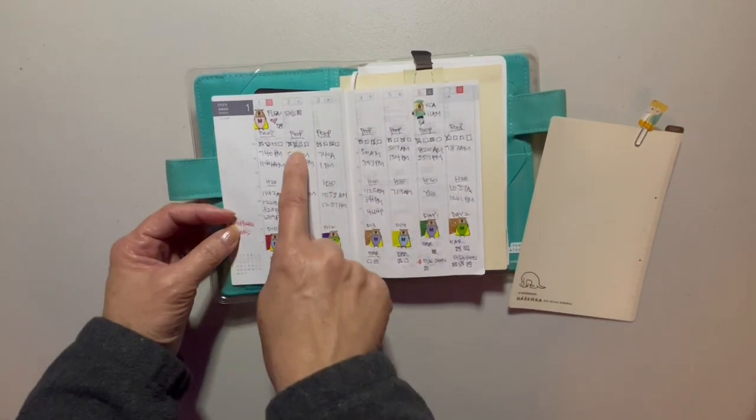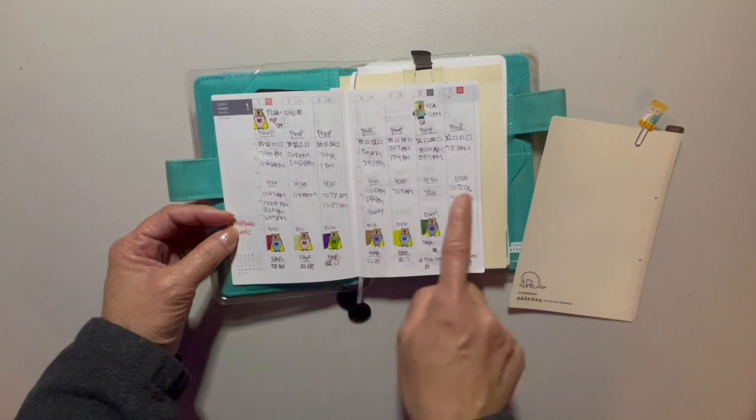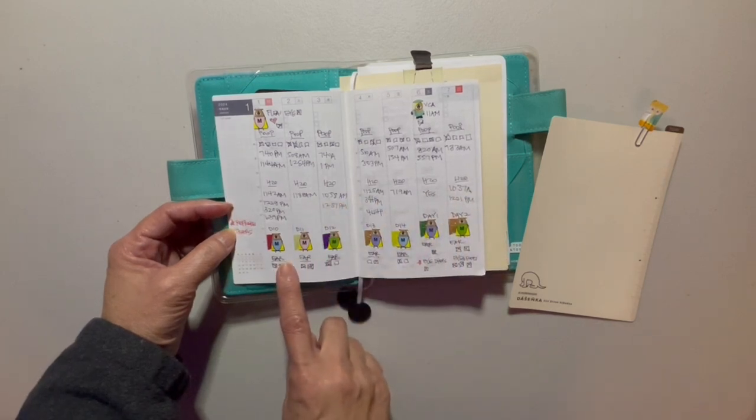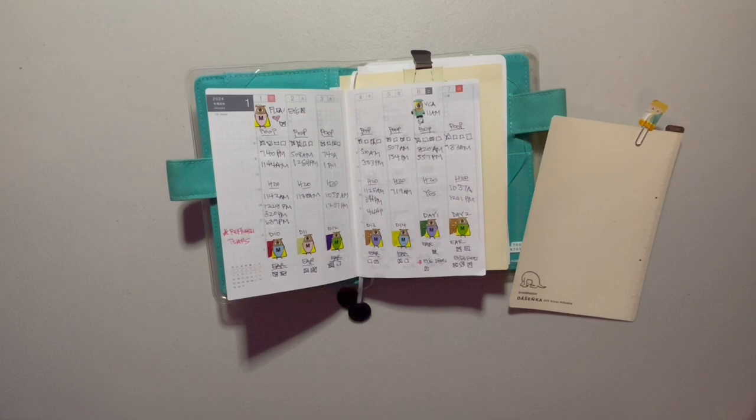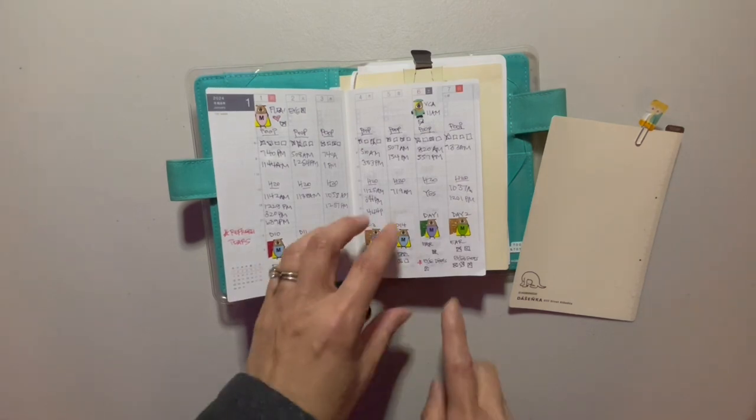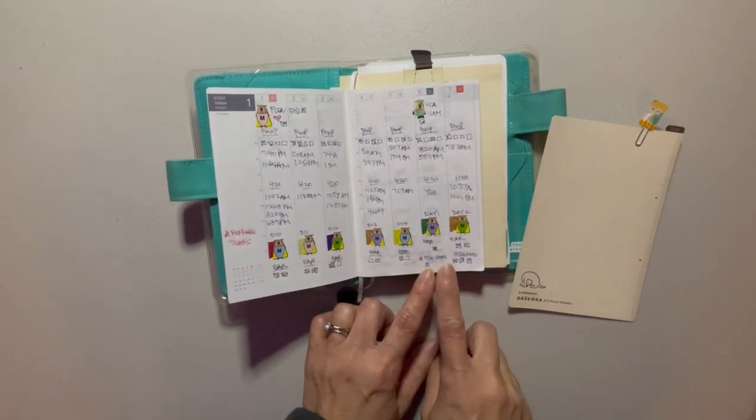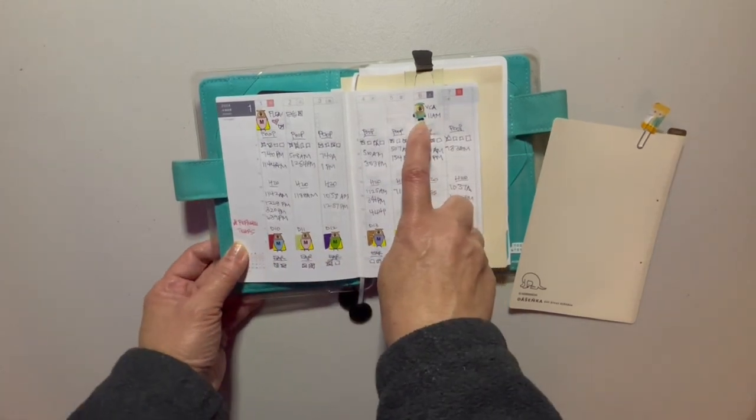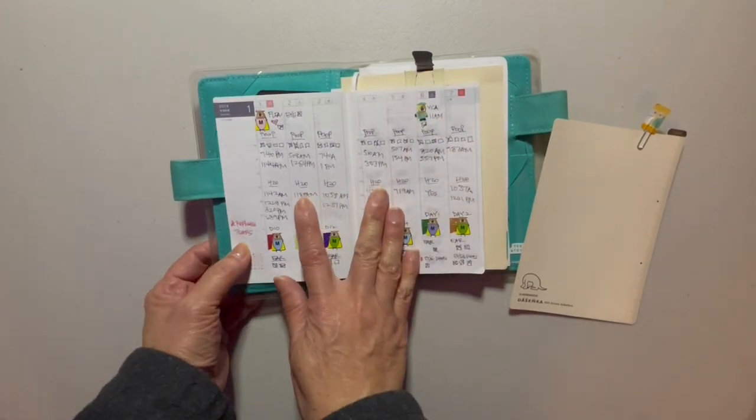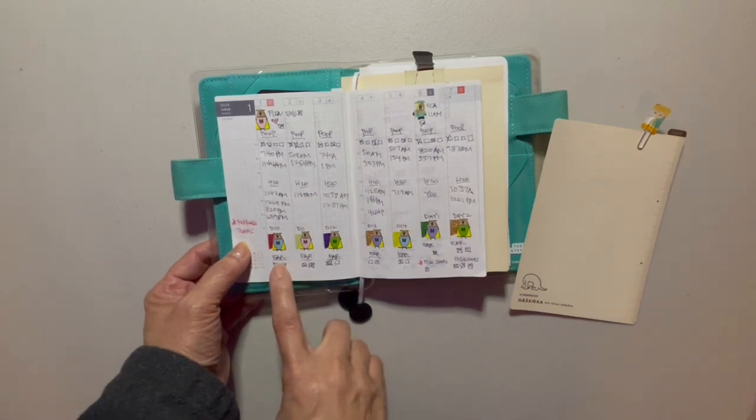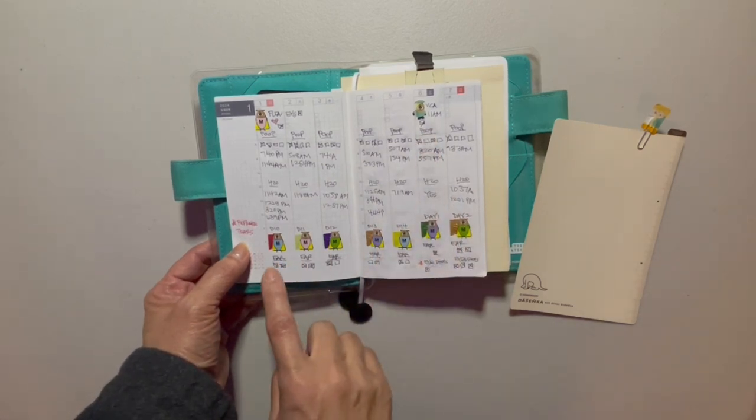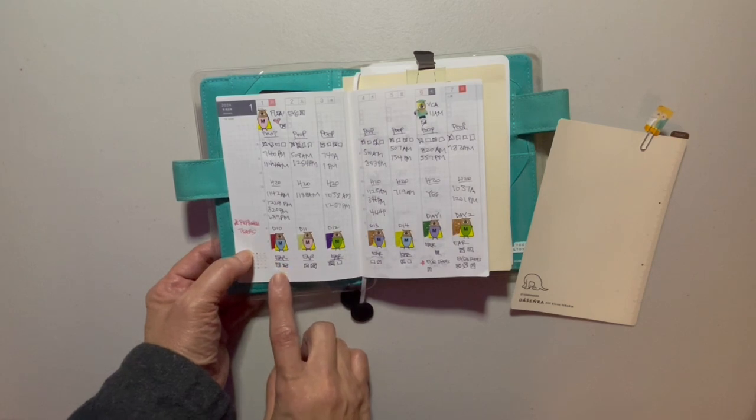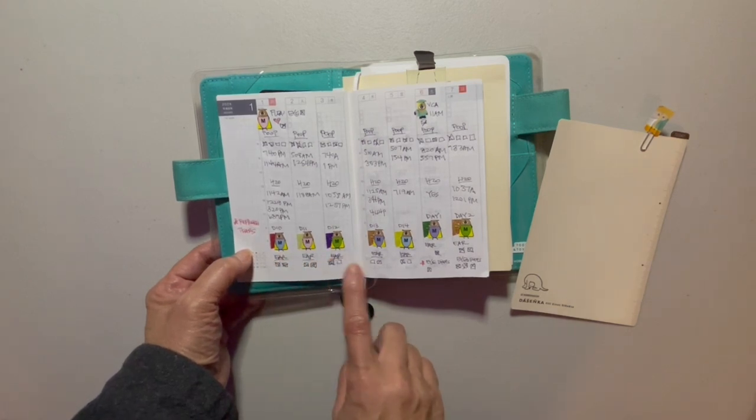Going back to here. So I mark down when he poops, when he drinks water, and because Bruce is having problems with his ears and eventually you'll see down here on Saturday with his eyes, this is how I keep track. On the 6th, we had an appointment with his vet to check out his ears. So up until this point last year, at the end of December, the vet prescribed ear medication for him. We had to give it to him twice a day. And so this is where we were giving it to him.